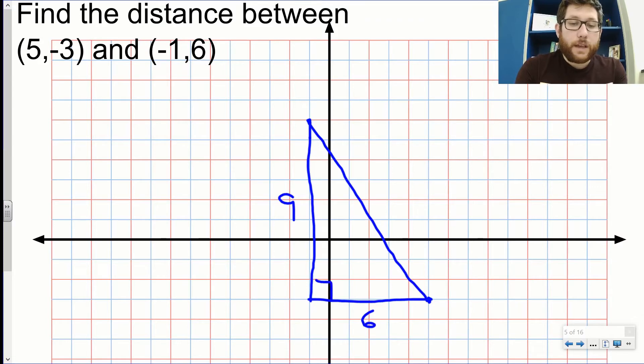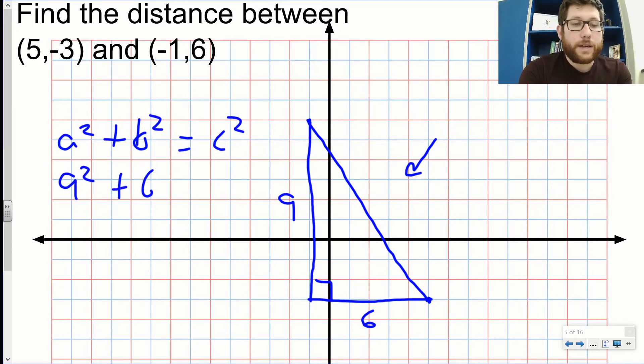If I was thinking about this as a right triangle and wanted to solve for the hypotenuse, do we have a formula that helps us? We do. We have a² + b² = c², the Pythagorean theorem. So we end up with 9² + 6² = c². 9 squared is 81, 6 squared is 36.